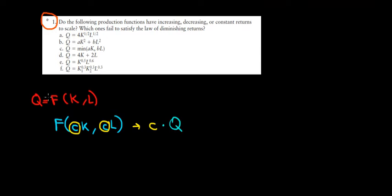We have a production function which depends on capital and labor. Returns to scale has to deal with increasing capital and labor by the same proportion — let's call that proportion C, which is a constant. After we increase inputs by that proportion, our function will also be multiplied by a proportion. Our goal is to compare the proportion by which we increase the input relative to the proportion by which the output changes.